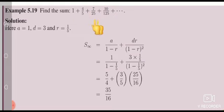25 by 5 is another 5, 125 by 25 is again 5. So here A is 1, D is 3, and R. But for R, the fraction form is 1/5, 1/5 squared, so the common ratio that we get is 1/5.